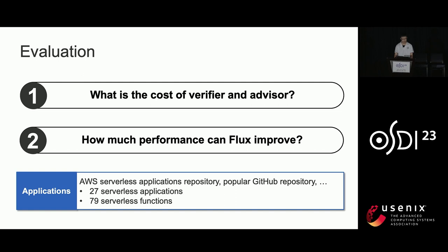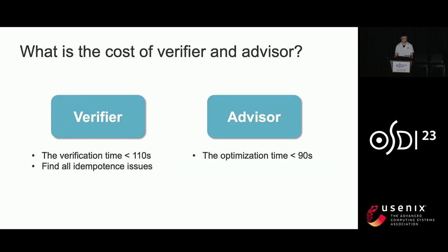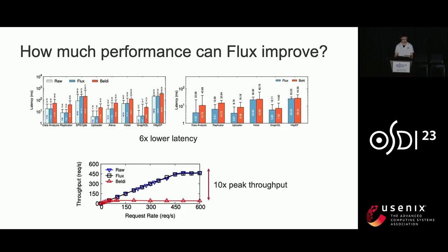In the evaluation, we answer two questions: what is the cost of the verifier and advisor, and how much performance can Flux improve? We evaluated Flux on 27 serverless applications with 79 serverless functions collected from the AWS serverless application repository and popular GitHub repositories. The verifier takes less than 110 seconds to verify an application and finds all idempotent issues. The advisor takes less than 90 seconds to find the operation set. Because Flux logs only necessary operations rather than all operations, compared with Beldi and Boki it achieves much lower latency and about 10 times the peak throughput in some applications.